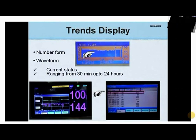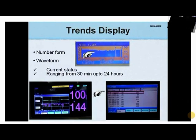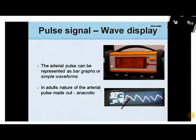The display style can be changed from the plethysmographic waveform to a simple number format. The trend over 30 minutes up to 24 hours can be viewed in the form of waves or bar diagram. Trends can also be represented in the form of a table, and the arterial pulse can be represented as bar graphs or simple waveforms.